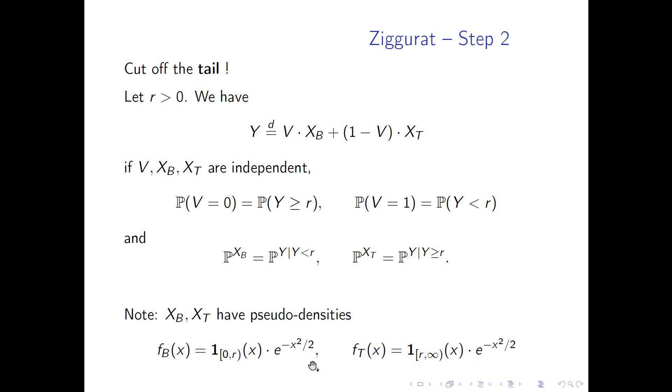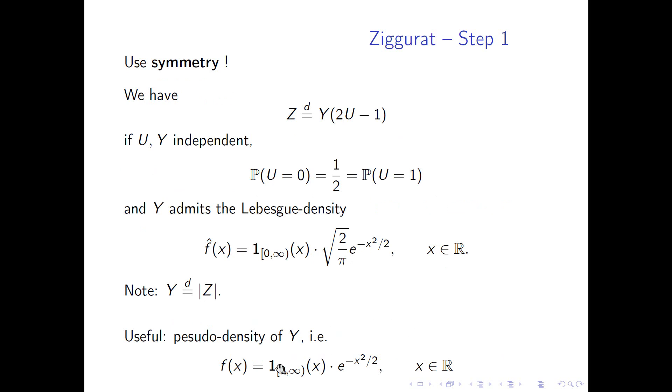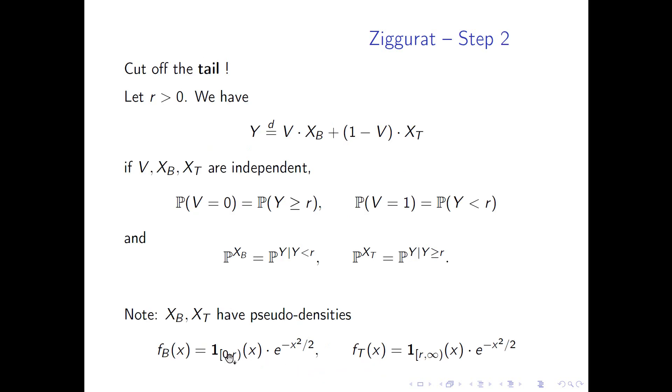That's the decomposition of Y. And for the following, we need the fact that X_P and X_T have these pseudo-densities here. And intuitively, these pseudo-densities for these conditional distributions are obvious. So X_P is the base variable, so we are conditioning on values between zero and r. And X_T is the tail variable, so we are conditioning on the values between r and infinity. Conditioning leads just to the modification of the indicator function, according to the ranges on which we are conditioning. And in the supplemental parts, there will be more details on this, how this is actually derived.